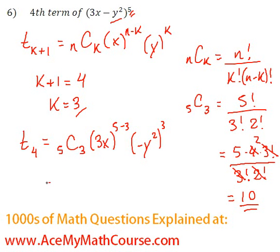So, plug the 10 in here for 5 choose 3. And we have 3x squared because 5 minus 3 is 2. And negative y squared to the power of 3, which is negative y squared cubed. It's negative y to the power of 6. Because the cube, the 3, multiplies the 2.